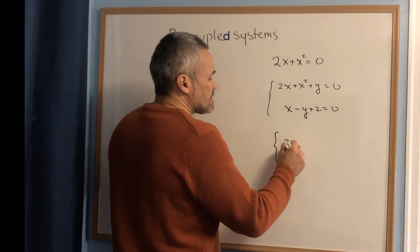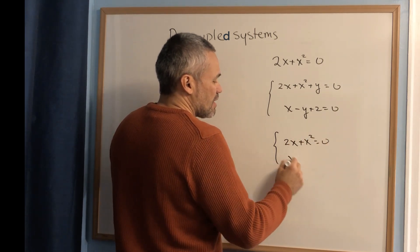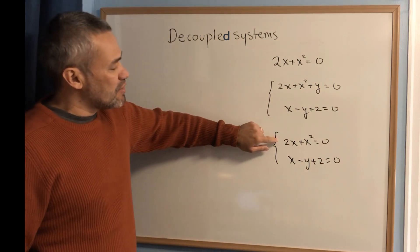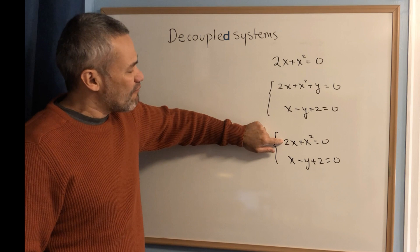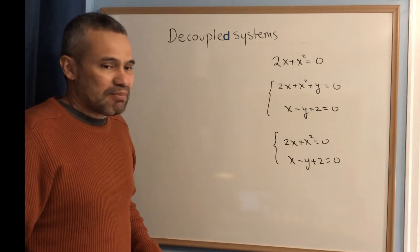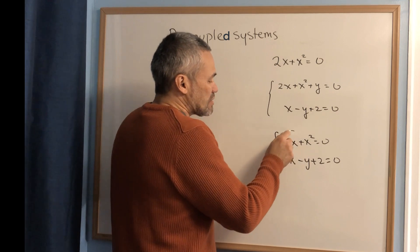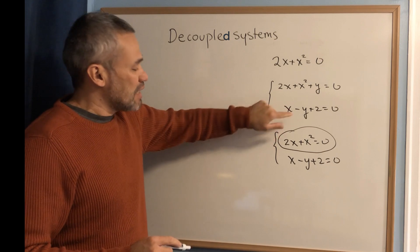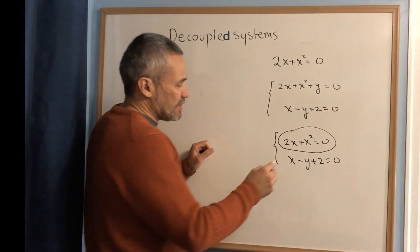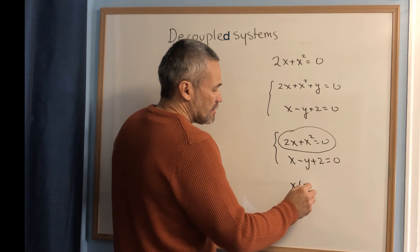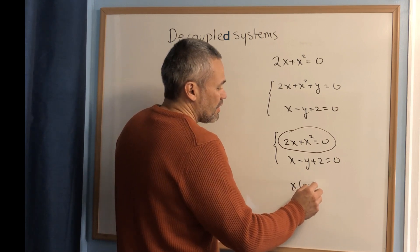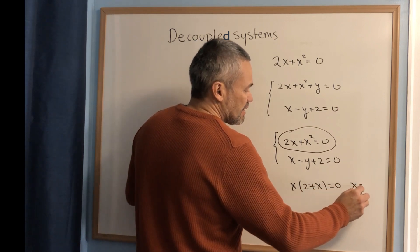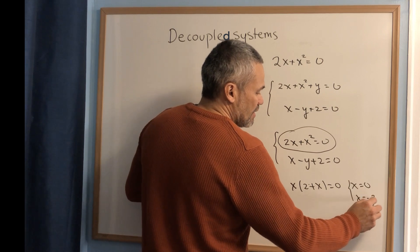When one of the equations only has one variable, we call this a decoupled system. The way to proceed is we solve first the equation that doesn't have the two variables, and then we solve the other. For example, to solve 2x plus x squared equals 0, we factor: x times (2 plus x) equals 0, which means x equals 0 or x equals negative 2.